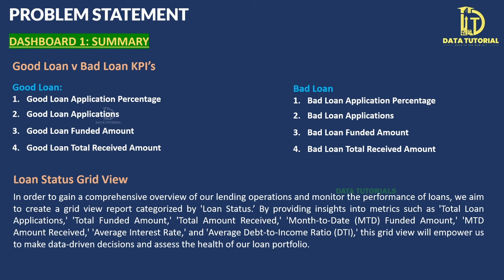Now we start writing SQL queries based on the problem statement. The first KPI is Total Loan Applications. Since each row represents one application, we use COUNT(id). The query is: SELECT COUNT(id) AS total_loan_applications FROM bank_loan_data. Running this returns 38,576 — the total number of loan applications.